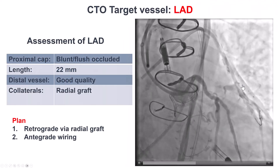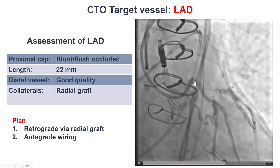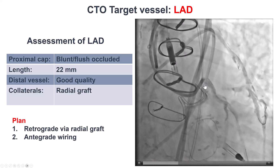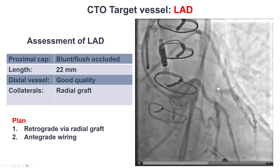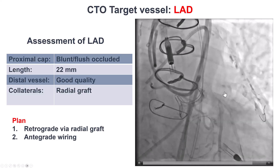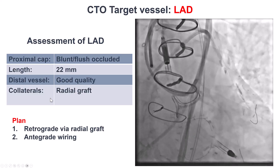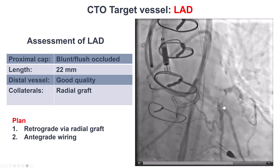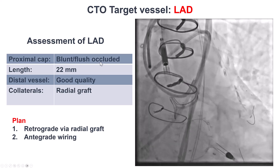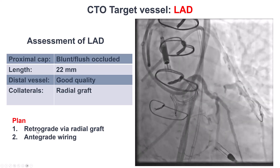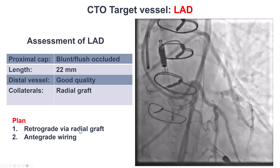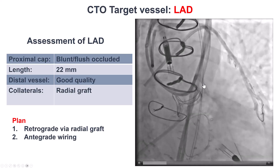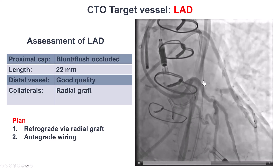The idea was to open the native LAD. We do have a blunt proximal cap with a length of about 22 mm based on CT, good quality distal vessel filling through the radial graft, and a nice retrograde access to the distal vessel. Based on that and because of the flush ostial occlusion, the plan was to try first with a retrograde approach through the graft, and then if that failed, try antegrade wiring potentially using intravascular ultrasound to clarify the origin of the LAD.